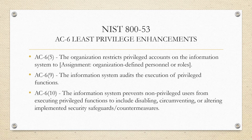Lastly for the moderate baseline, AC-6 Enhancement 10: the information system prevents non-privileged users from executing privileged functions, including disabling, circumventing, or altering implemented security safeguards and countermeasures. A regular user of your information system shouldn't be able to go around your security mechanisms to gain more access or perform a function outside the scope of their regular job duties. Making sure that the principle of least privilege is really enforced here — that's the key with this enhancement.